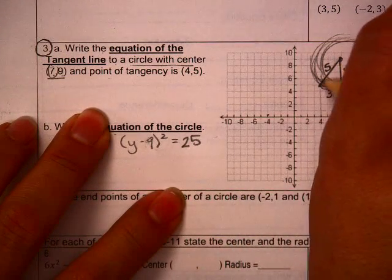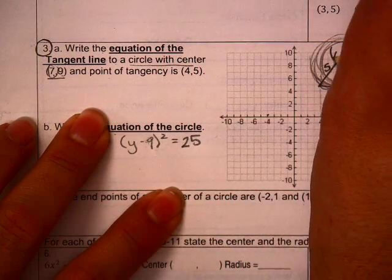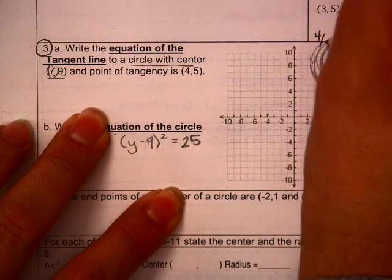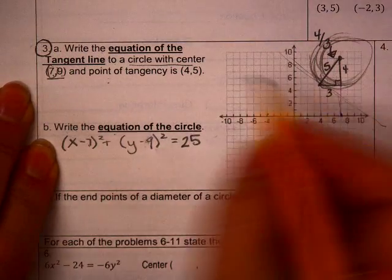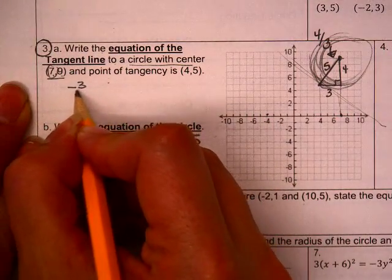The slope of this radius here is up 4 over 3, and if I want to know the equation of the tangent line, it needs to be a negative 3 over 4.